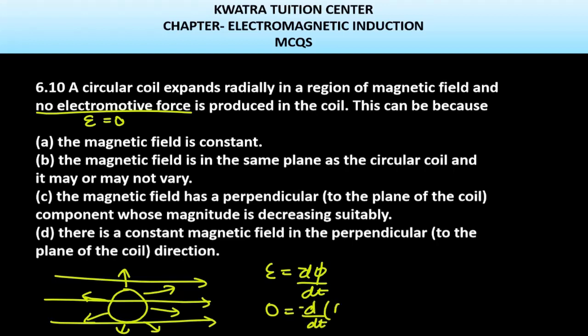It will be 0, right? So if this is 0, then this can be the condition of electromotive force as 0. So b is correct. A can't be correct because if magnetic field is constant, it can have some electromotive force. So that's why a is incorrect.